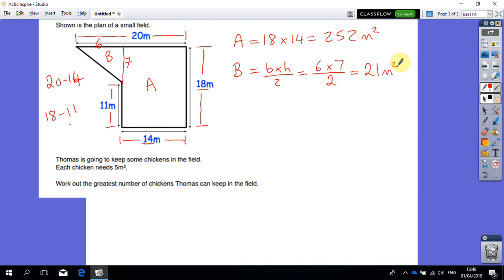Now I need to do the simple part, which is adding the two areas together. So 252 plus 21 gives me 273 meters squared. This is now the total area of my shape. What I now need to do is go back to the question.